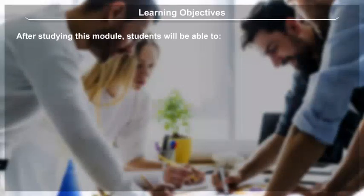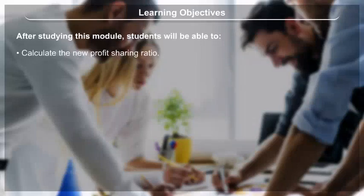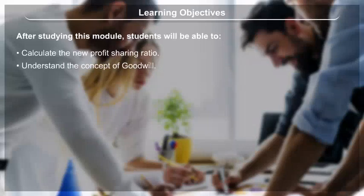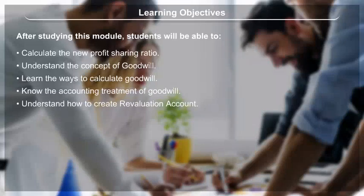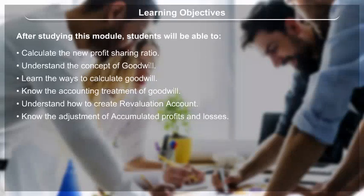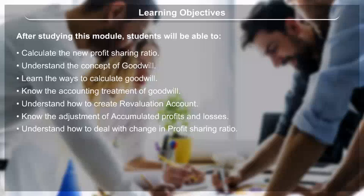Learning Objectives: After studying this module, students will be able to calculate the new profit sharing ratio, understand the concept of goodwill, learn the ways to calculate goodwill, know the accounting treatment of goodwill, understand how to create a revaluation account, and know the adjustment of accumulated profits and losses.